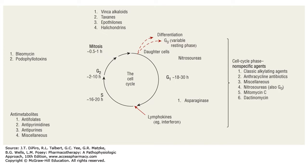During the S phase of the cell cycle, DNA synthesis is occurring — we're actually duplicating DNA. If I can halt that, the cells don't have blueprints to make a new cell. Some drugs are cell cycle non-specific, while others are cell cycle specific. We'll key into which drugs are which, and that also speaks to some of the adverse effects we'll see. Go back and review the cell cycle from physiology.